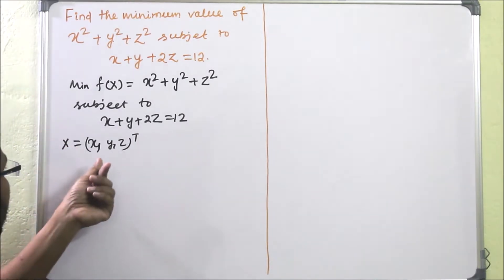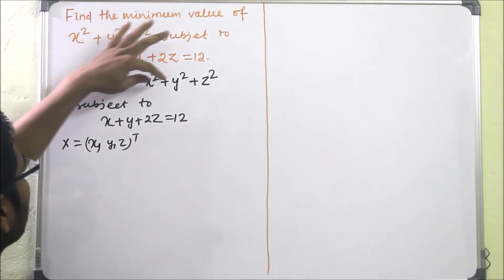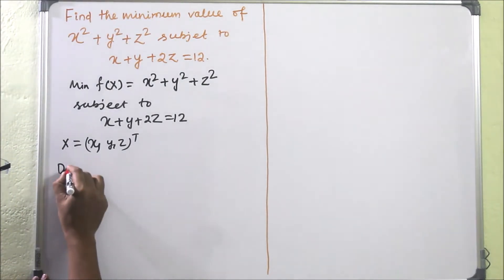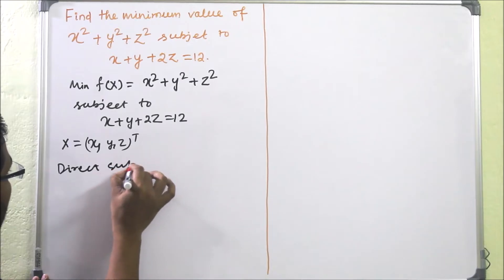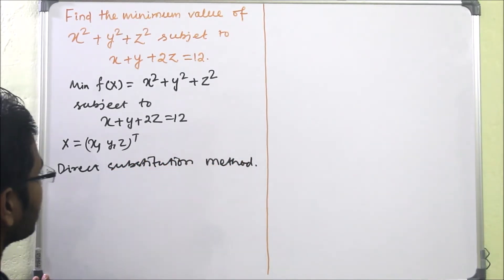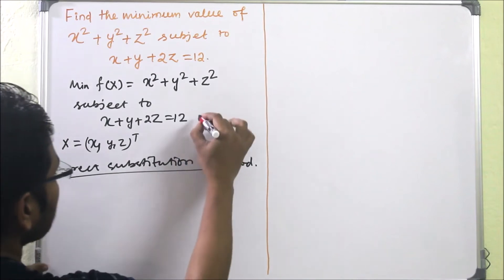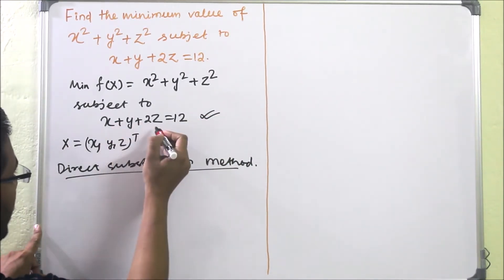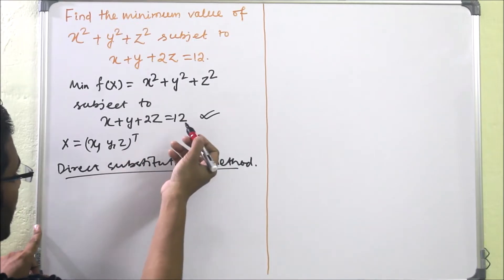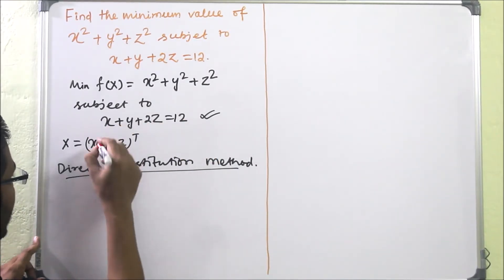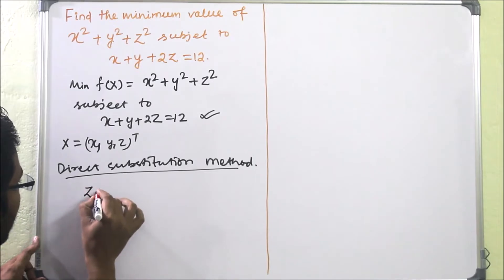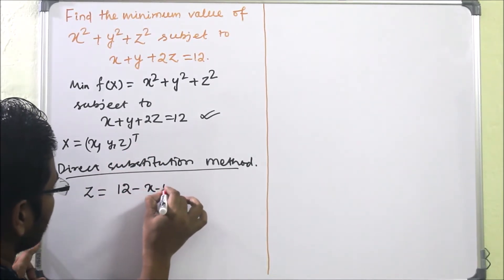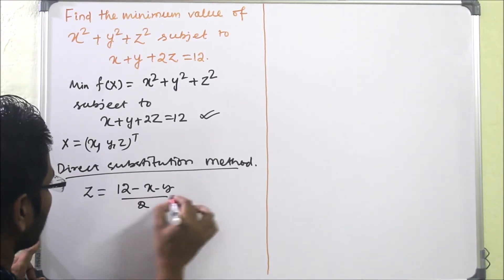We have to find x, y, z so that this value is minimum. We will use the direct substitution method. From the equality constraint, we write one variable in terms of the others. So we can write z = (12 − x − y) / 2.